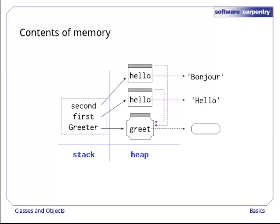Just as a reminder, here's what memory looks like after both objects have been created. The two objects refer to the same class, so they have the same behavior. However, each one's hello member refers to a different value, so when the method greet is called, it does something different for each object.